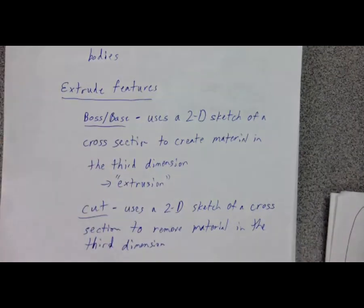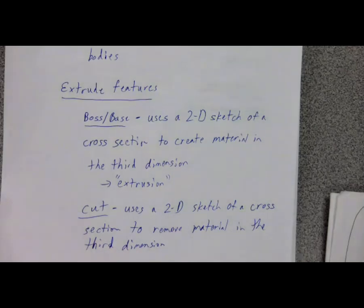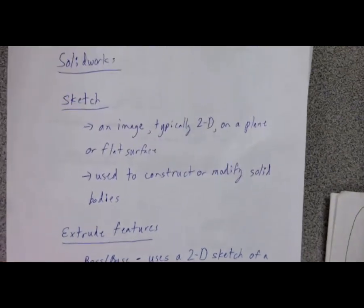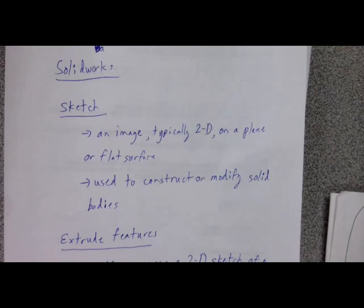We talked about orthographic projections — that's the two-dimensional view looking straight out at the object. We'll draw what that cut looks like from an orthographic projection, then use that cross section to remove material in the third direction. The sketch is where we create an image to create solid material or modify solid material.